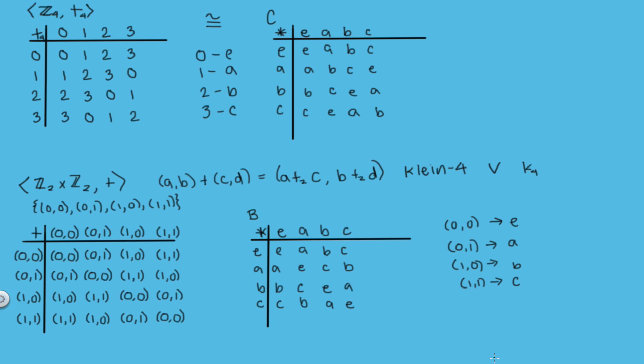So what we've done here is actually shown that any group with four elements must be isomorphic to either the integers modulo 4 or the Klein 4 group. So these are our two groups up to isomorphism. And that concludes this video.